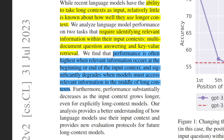However, if the information you're looking for is right in the middle of a long context, then the performance of these LLMs degrades a lot. Another important finding was that performance substantially decreases as the input context grows longer, even for explicitly long context window models.